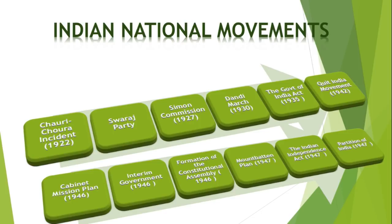The next is the Quit India Movement, 1942. On August 8, 1942, the Congress, in its meeting at Bombay, passed the resolution known as the Quit India Movement. Gandhiji asked the British to quit India and gave a call for 'Do or Die' to his countrymen. Gandhi was arrested but other leaders continued the revolutionary struggle.